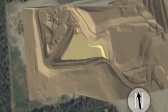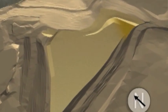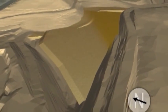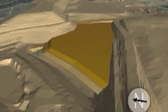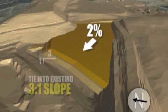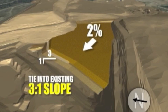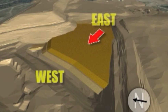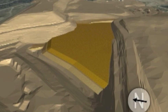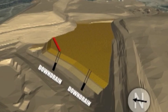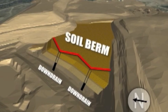This sheet shows placement of another 10-foot lift in the same area. Follow the same guidelines as Phase 1: maintain a 2% slope on top, tying into a 3-to-1 slope on the west edge. Remember, continue to work from east to west. When you reach the west edge, you'll be extending the down drains and creating another soil berm.